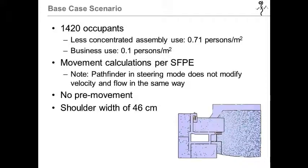So each method used a base case scenario with the design occupant load seen here. Movement calculations were conducted per SFPE, while an additional assessment of Pathfinder and steering mode was also used. No pre-movement was included for the base case, as Pathfinder was the only one that could incorporate a distribution. And for Pathfinder, a shoulder width of 46 centimeters was used, consistent with Predtechenskii-Milinskii design values for adults.